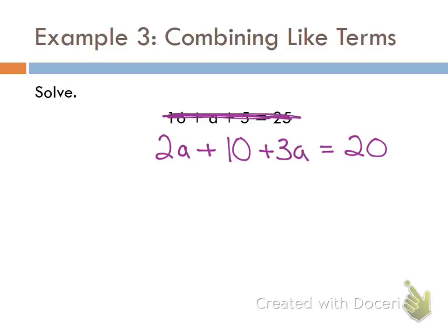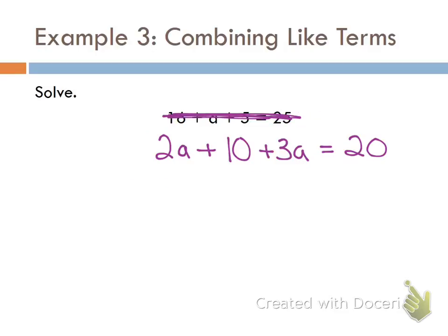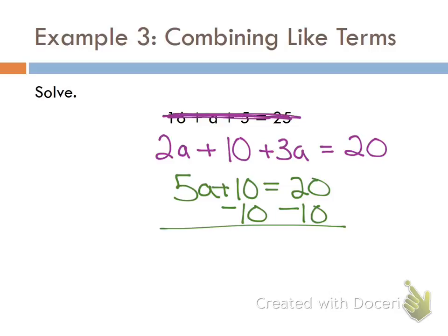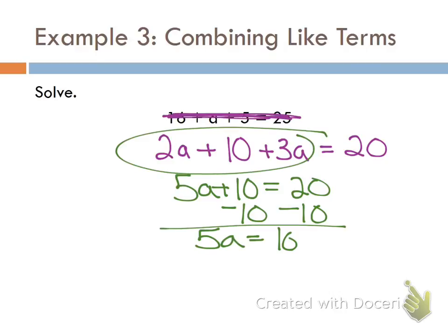What if I had 2a plus 10 plus 3a equals 20? Are there any like terms I can combine? 2a plus 3a equals 5a, so the equation becomes 5a plus 10 equals 20. Then I subtract 10 from both sides — actually, this is a two-step equation we'll learn tomorrow, but what I wanted you to see is the process of combining like terms first.